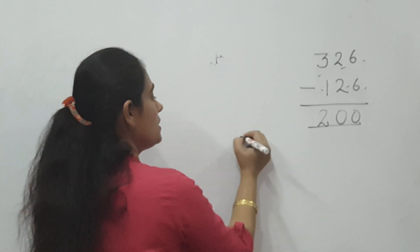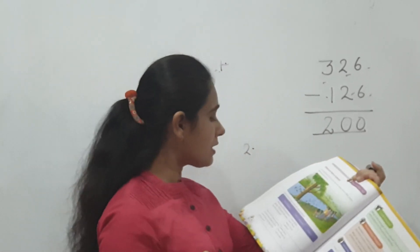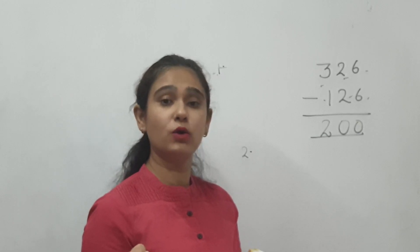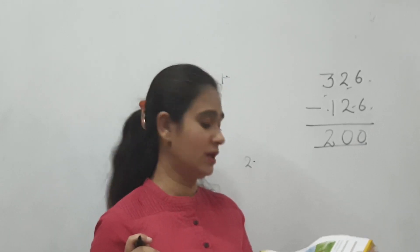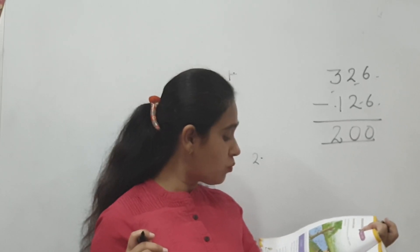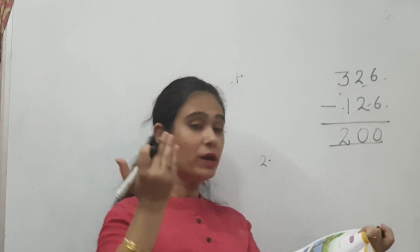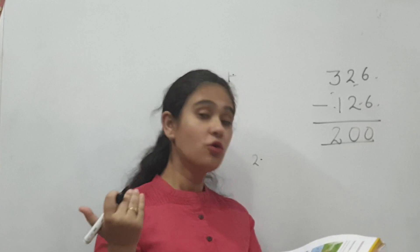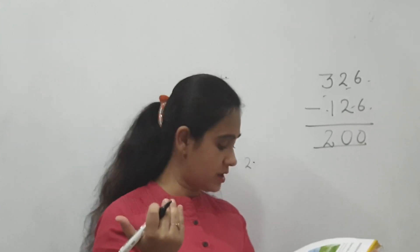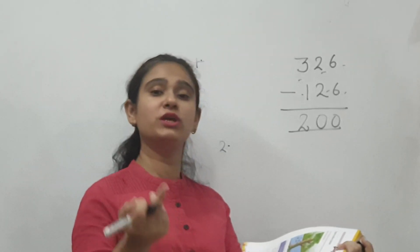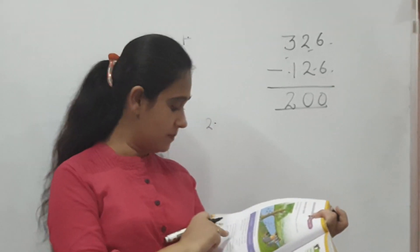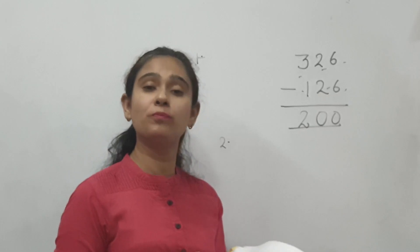Similarly, second part. There are 345 ducks in a group. How many ducks are there in a group? 345. 42 more have flown in. It means 42 ducks have flown in. First there were 345, 42 more came to us.